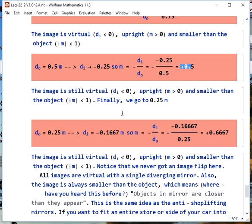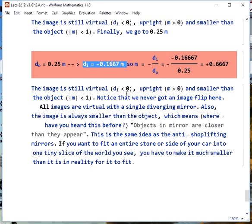Finally, we get much closer at 0.25 meters, image distance is negative 0.1667 meters, so the magnification is plus 2 thirds. The image is still virtual, upright, and smaller than the object. We never had an image flip here, because all the images are virtual, if you just have a single diverging mirror. Also, the image is always smaller than the object, and what this means, and this should sound familiar, objects in mirror are closer than they appear. They look smaller than they really are. You see the same thing in the anti-shoplifting mirrors in convenience stores.